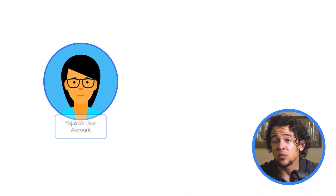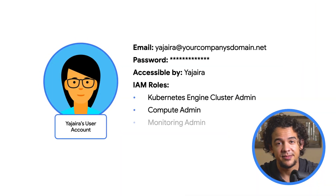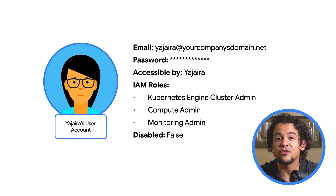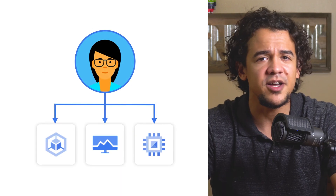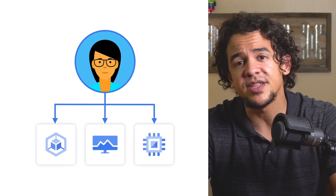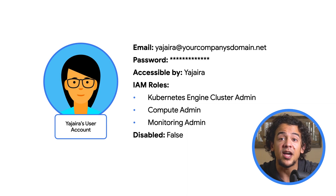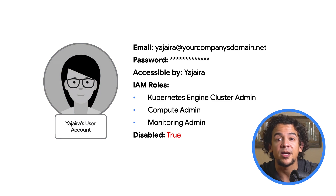So, service accounts — what exactly are they? To answer that, let's take a look at something you might already be familiar with: a user account. This account represents Jahira, the lead engineer on your team. She accesses the account with the email address and password associated with it, and access to it is shared with no one else. It has some IAM roles associated with it that grant permissions to do things like manage Kubernetes clusters, create compute instances, and configure monitoring on the project. For as long as Jahira works on the team, she can do whatever the IAM policy allows. And if she leaves the team, her account would be disabled so that it couldn't be used anymore. That's a user account.